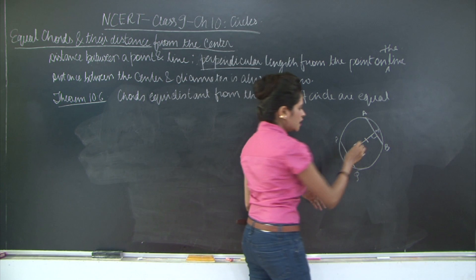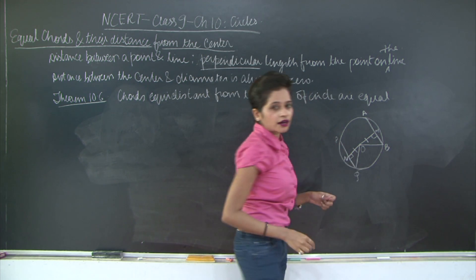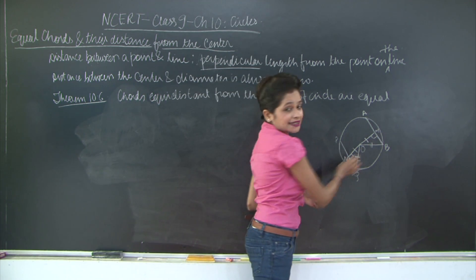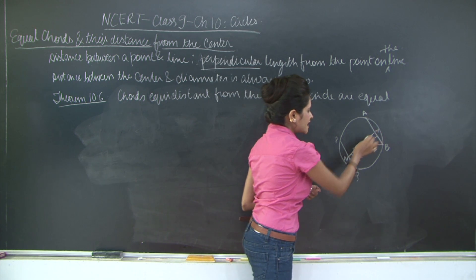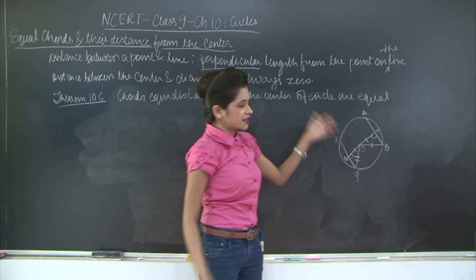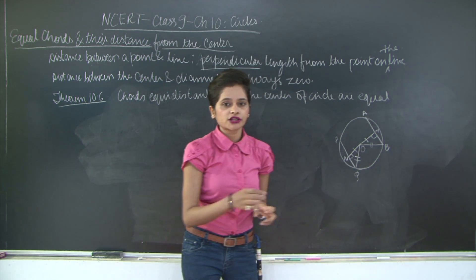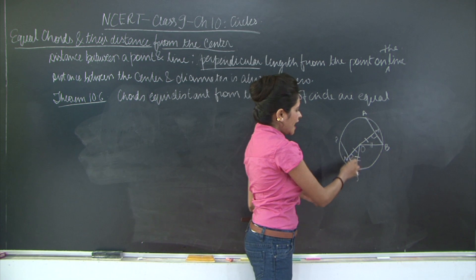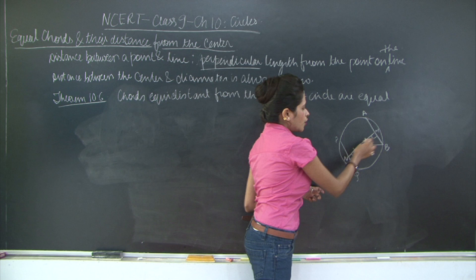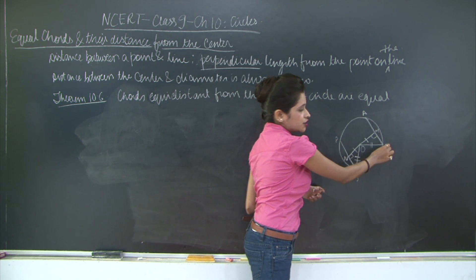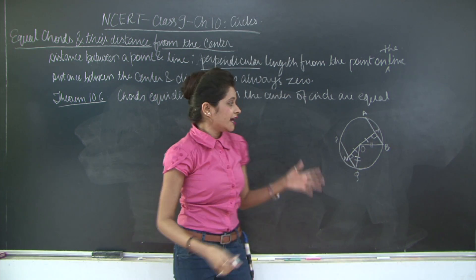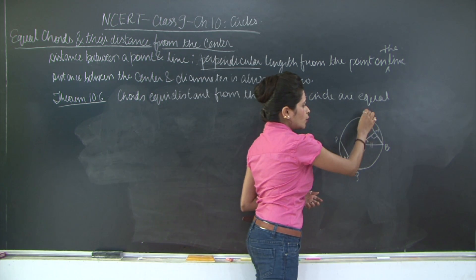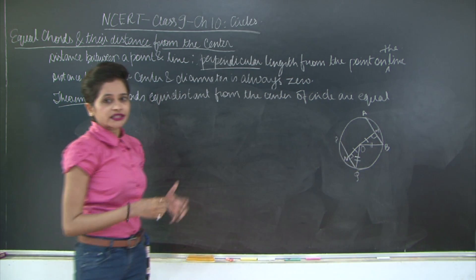This is a straightforward proof. Complete the triangles by drawing OB and OQ. The hypotenuses OB and OQ are equal because they are radii. Both are right angle triangles, and one side OM equals ON — this is given. Therefore the two triangles are congruent by the RHS test of congruence, giving MB equals NQ. Since MB is half of AB and NQ is half of PQ — because the perpendicular from the center bisects the chord — we therefore have AB equals PQ.